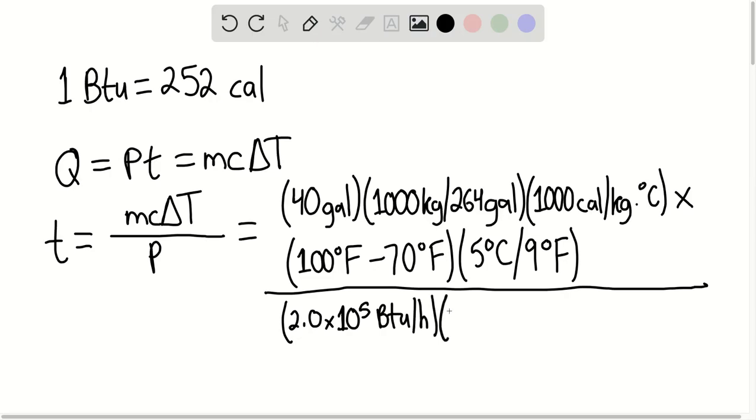Multiplied by 252.0 calories per British thermal unit and multiplied by 1 hour for every 60 minutes.